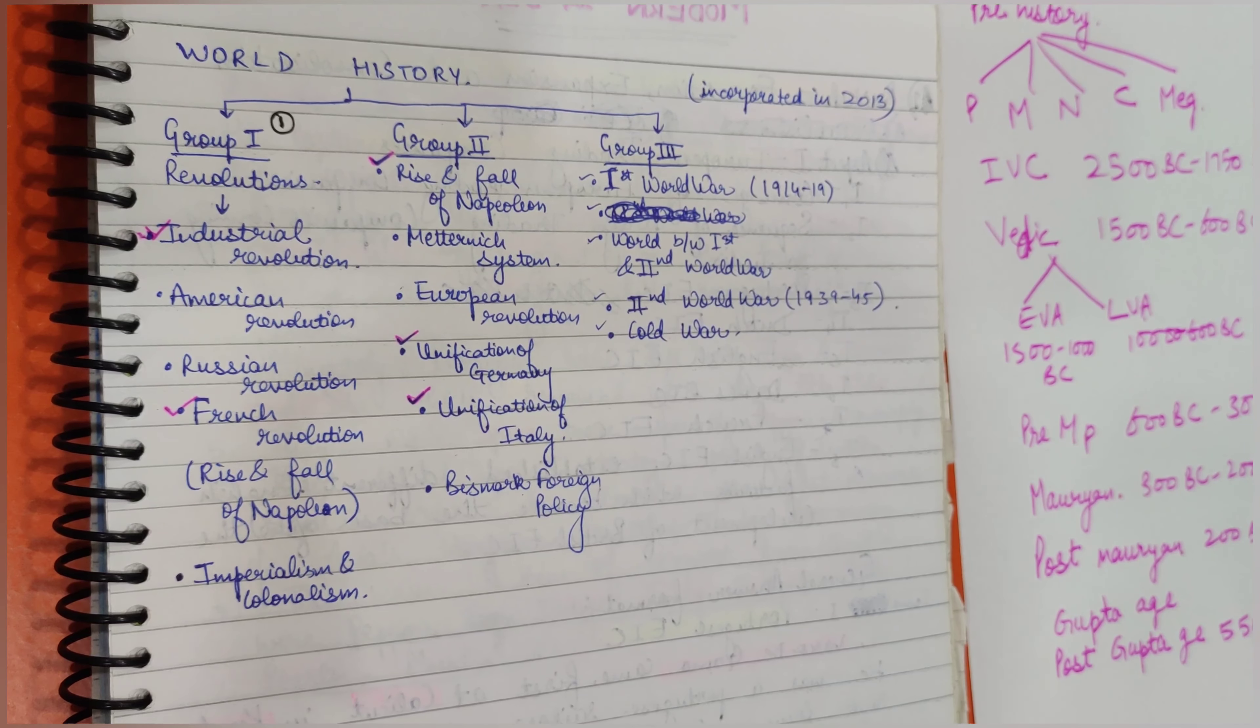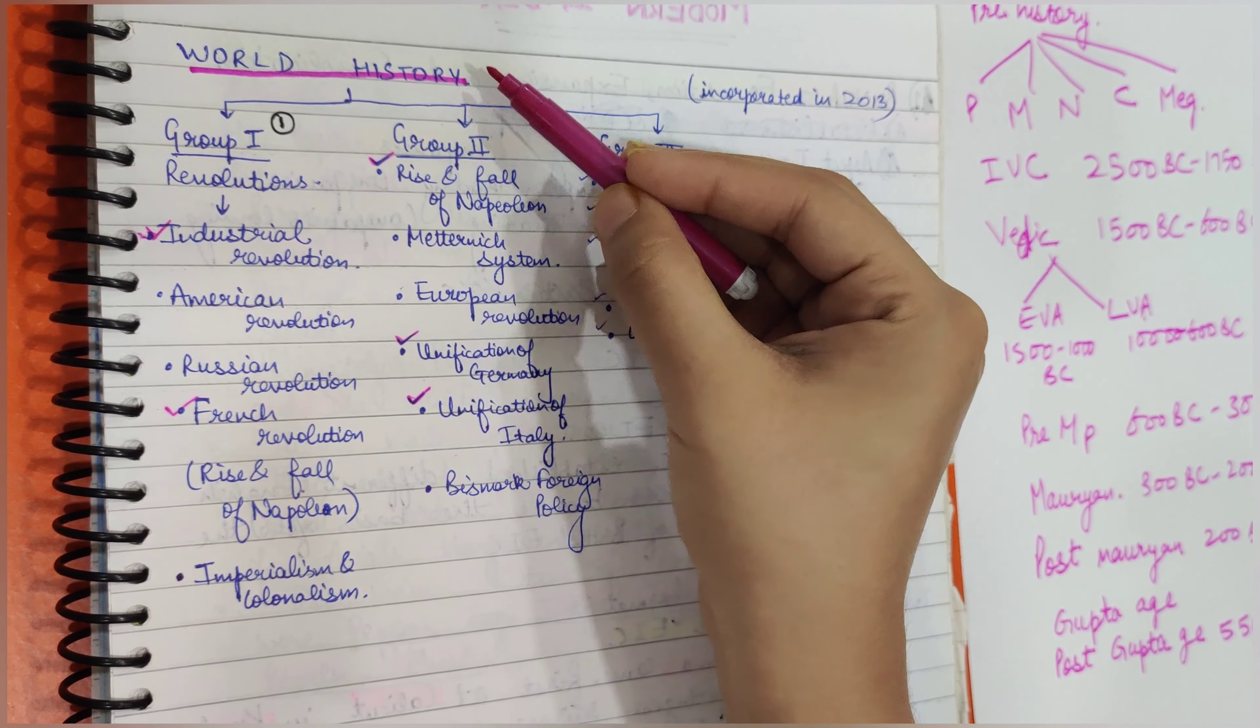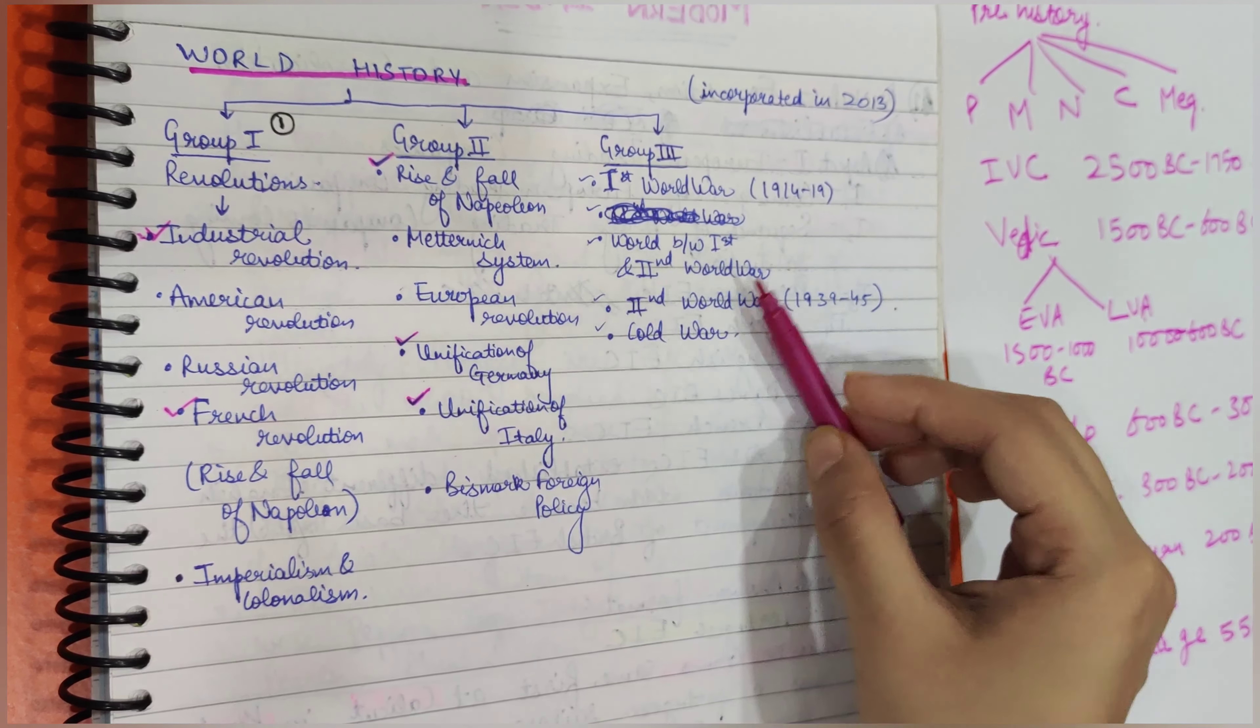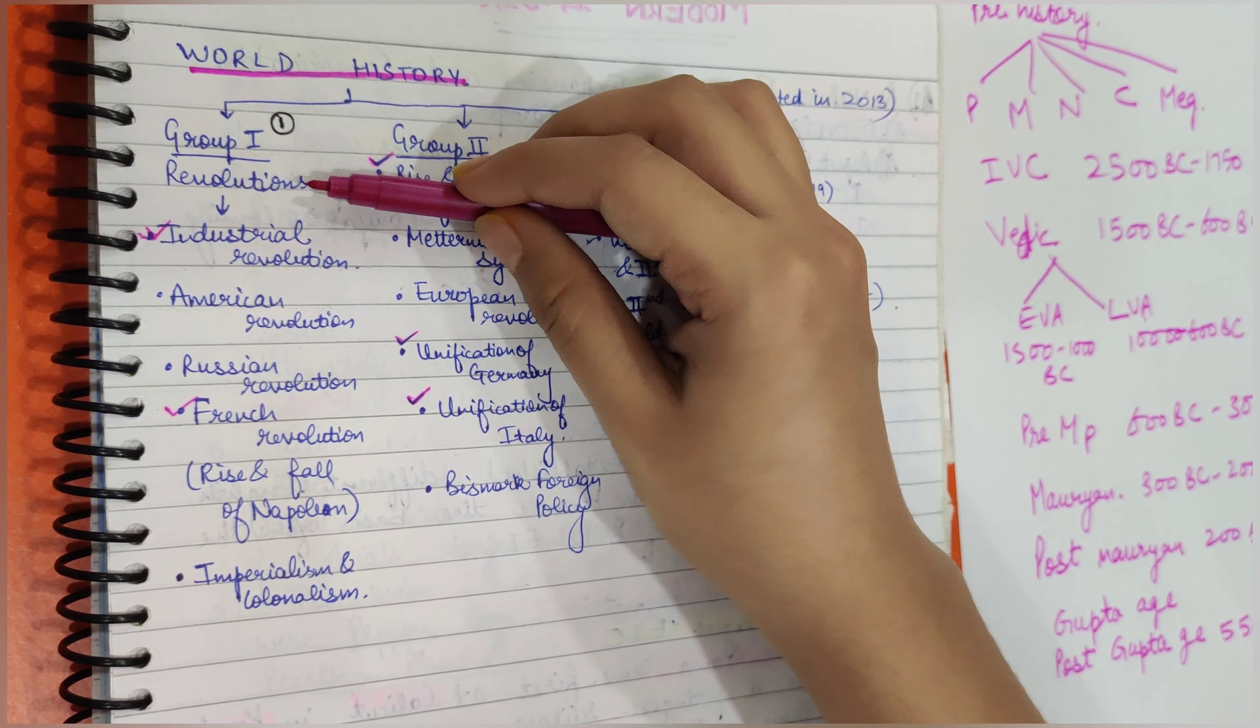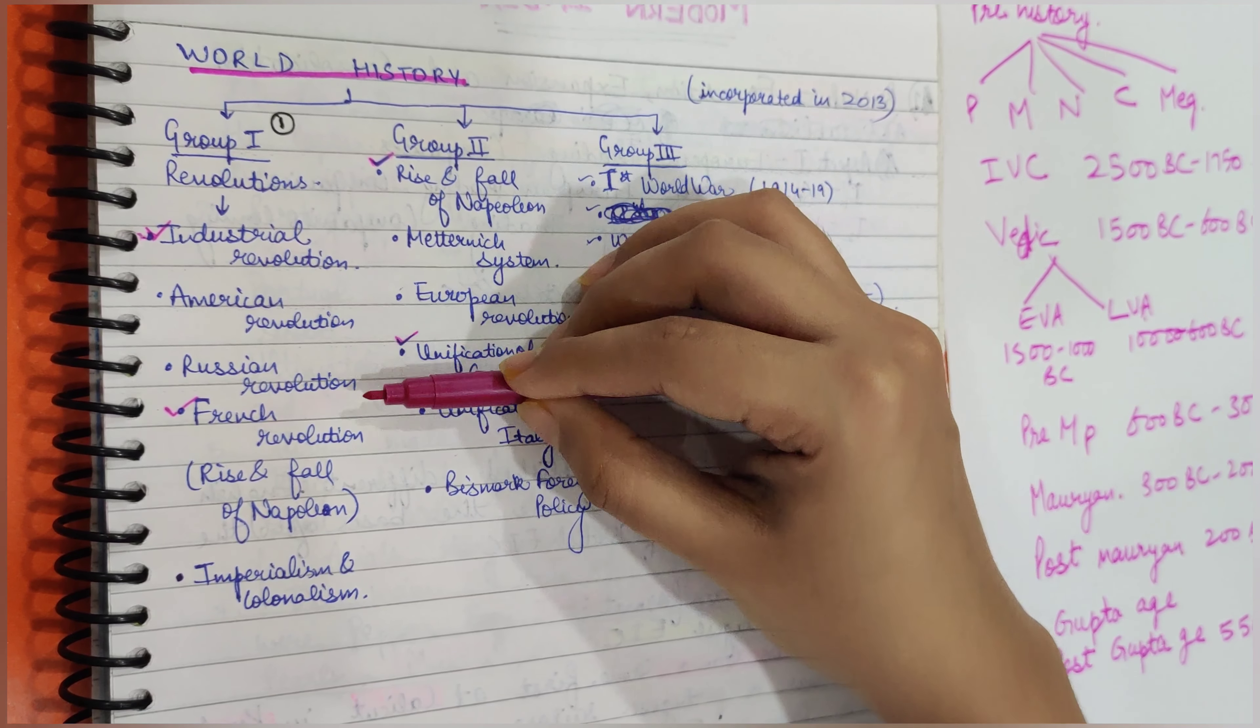Then we come to World History. We'll divide World History into three broad categories. First category would consist of revolutions like the Industrial Revolution, the American Revolution, the Russian Revolution, and the French Revolution.